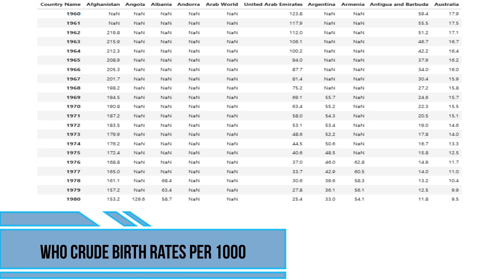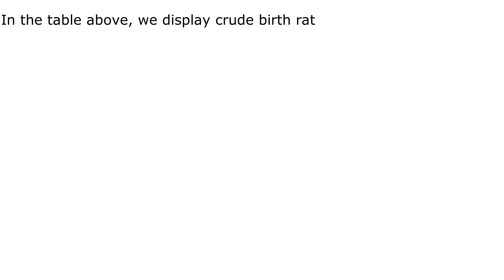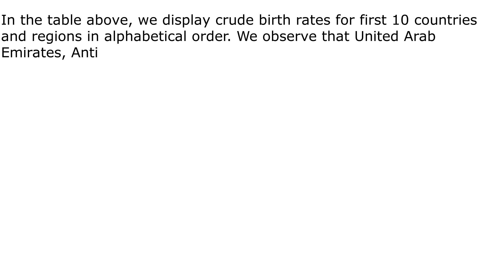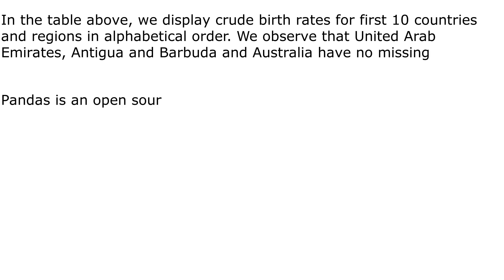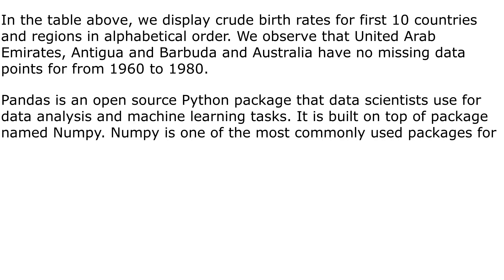WHO crude birth rates per 1,000: In the table above, we display crude birth rates for the first 10 countries and regions in alphabetical order. We observe that United Arab Emirates, Antigua and Barbuda, and Australia have no missing data points from 1960 to 1980.